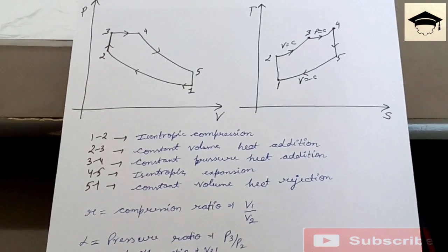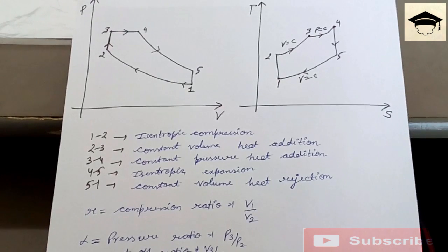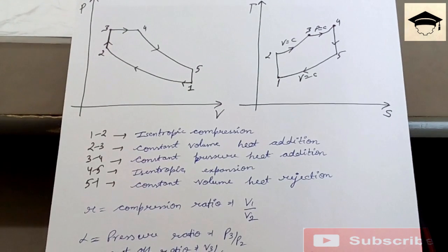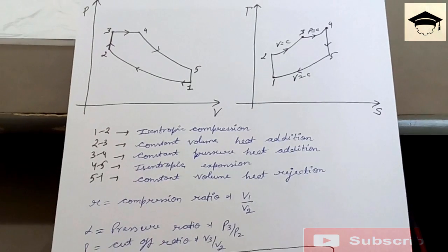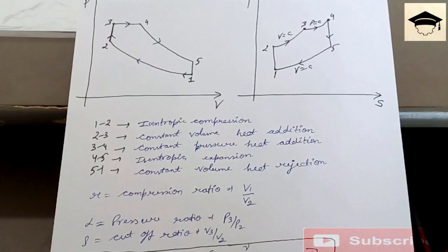Here compression ratio, that is r, is equal to v1 upon v2. Pressure ratio, that is alpha, is denoted by alpha and it is given by p3 upon p2. Cutoff ratio is denoted by rho and it is given by v3 upon v2.